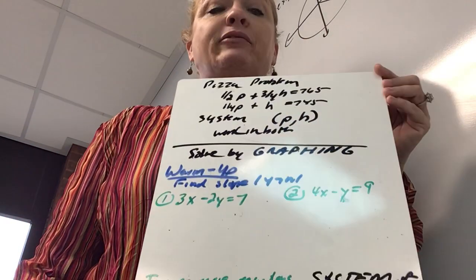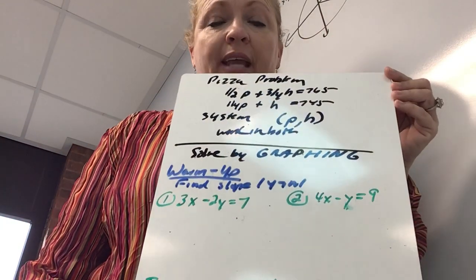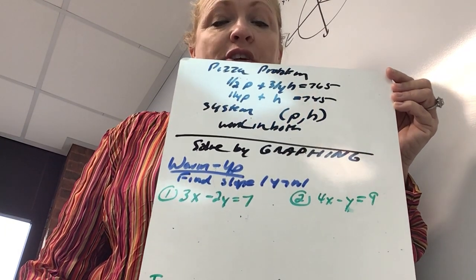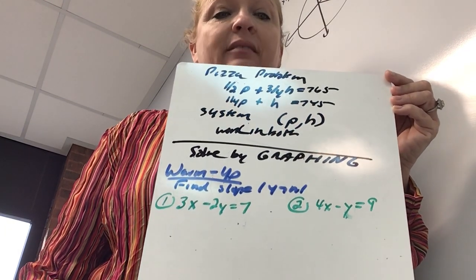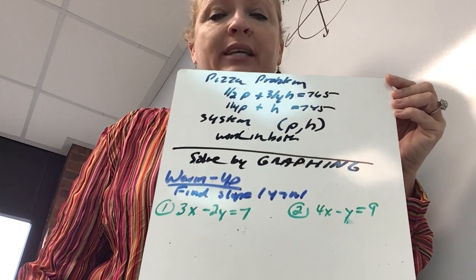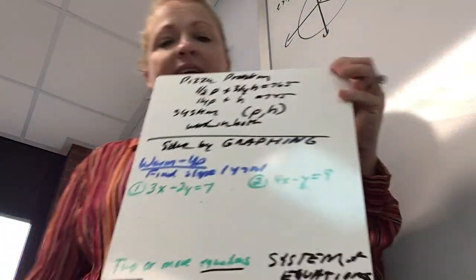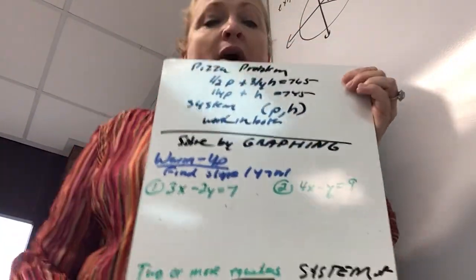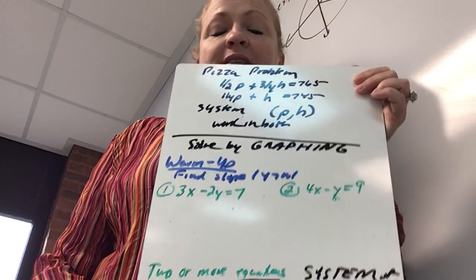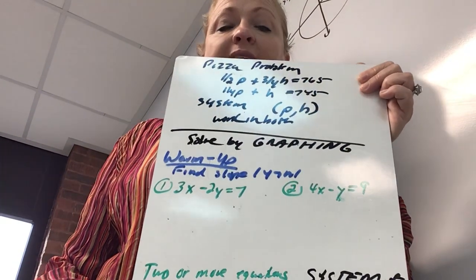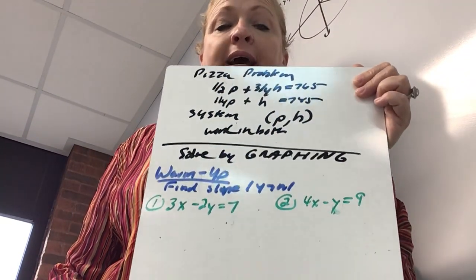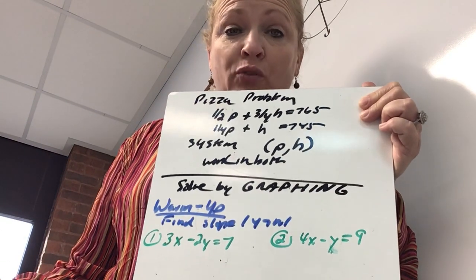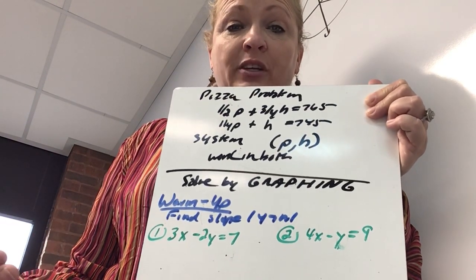We now have two equations and we are trying to figure out P and H — the ordered pair that works in both. This is an example of a system of linear equations. The top says 'solve by elimination,' but we're not ready for that yet. This was just a way to introduce what a system of equations means.